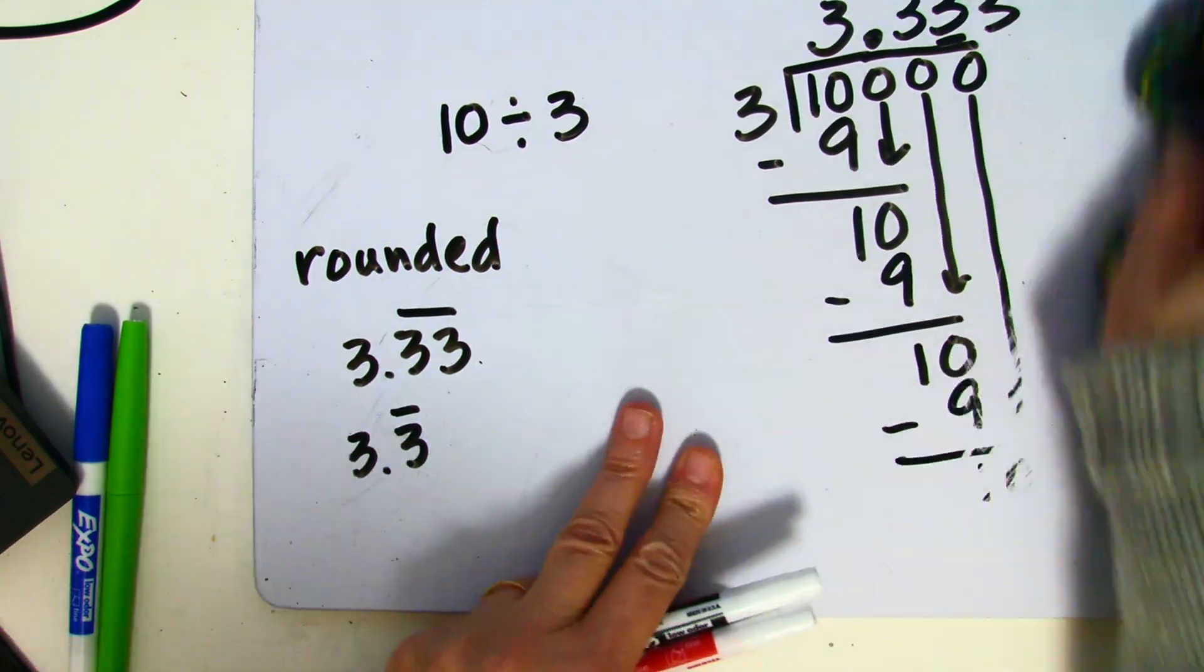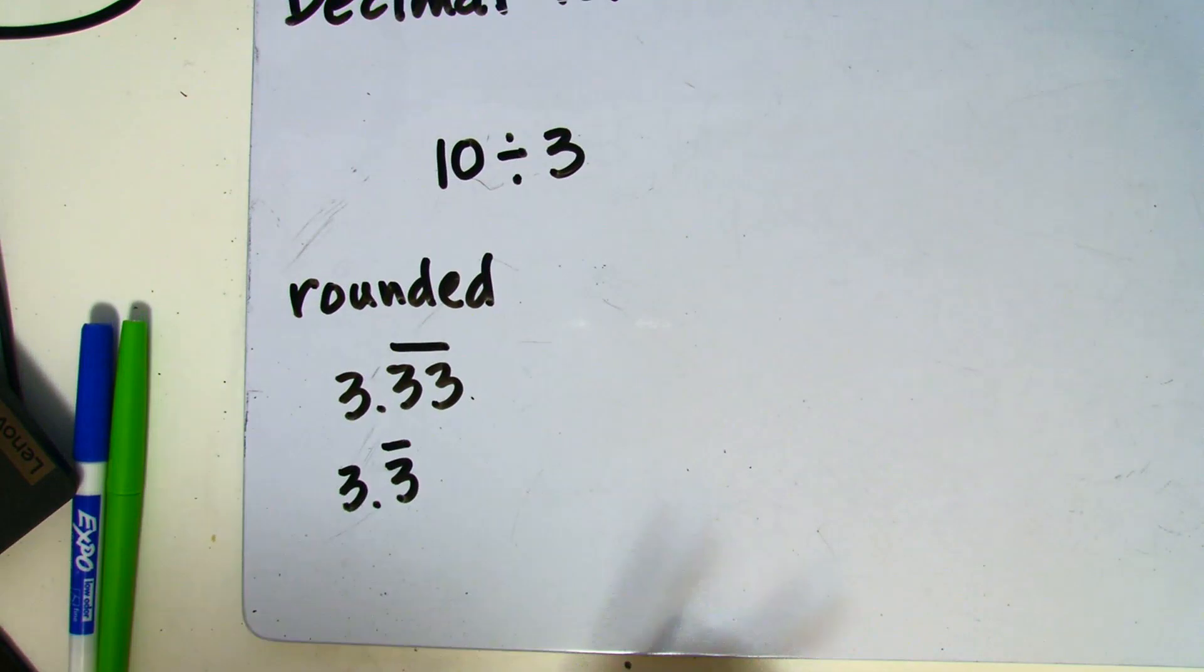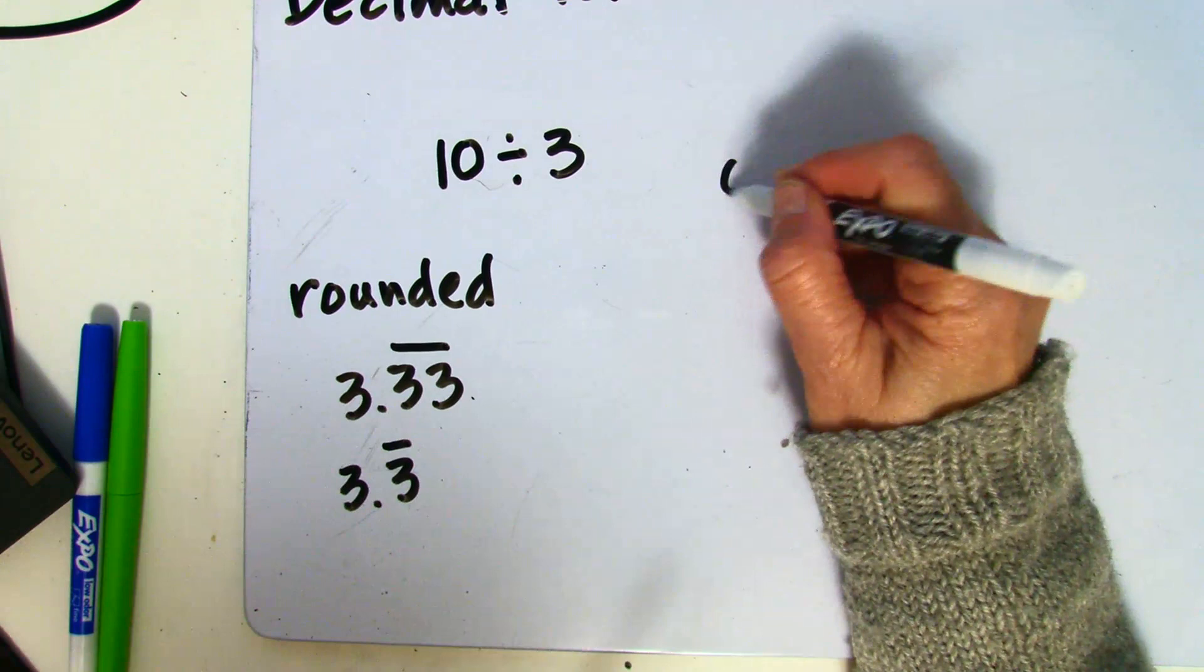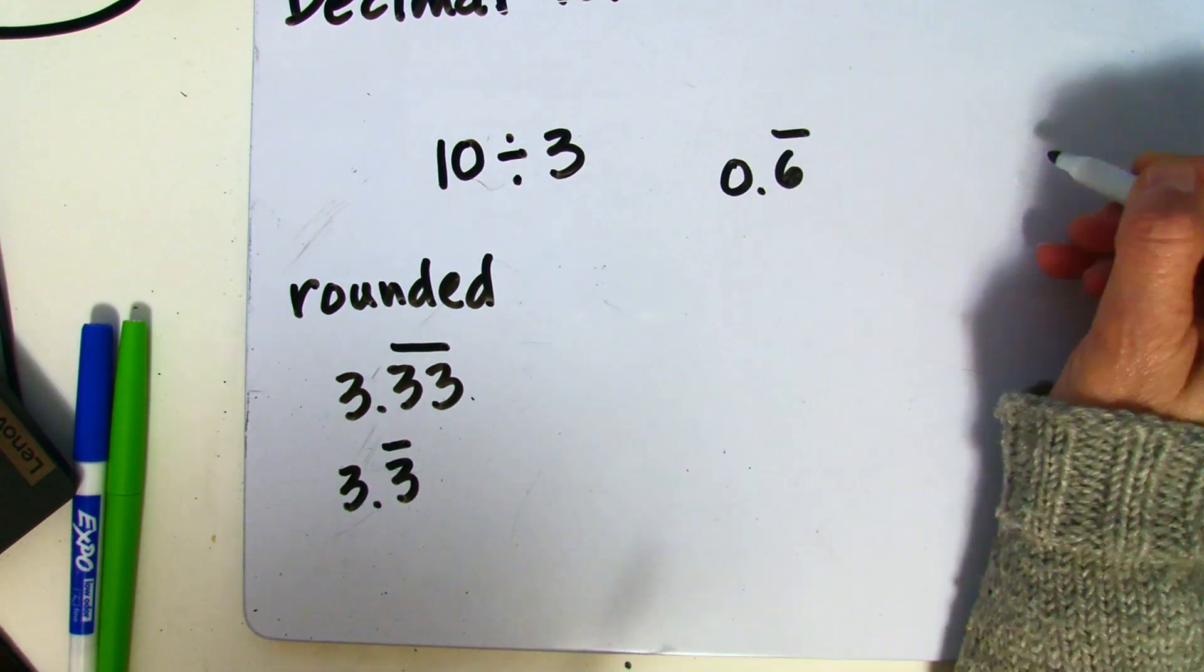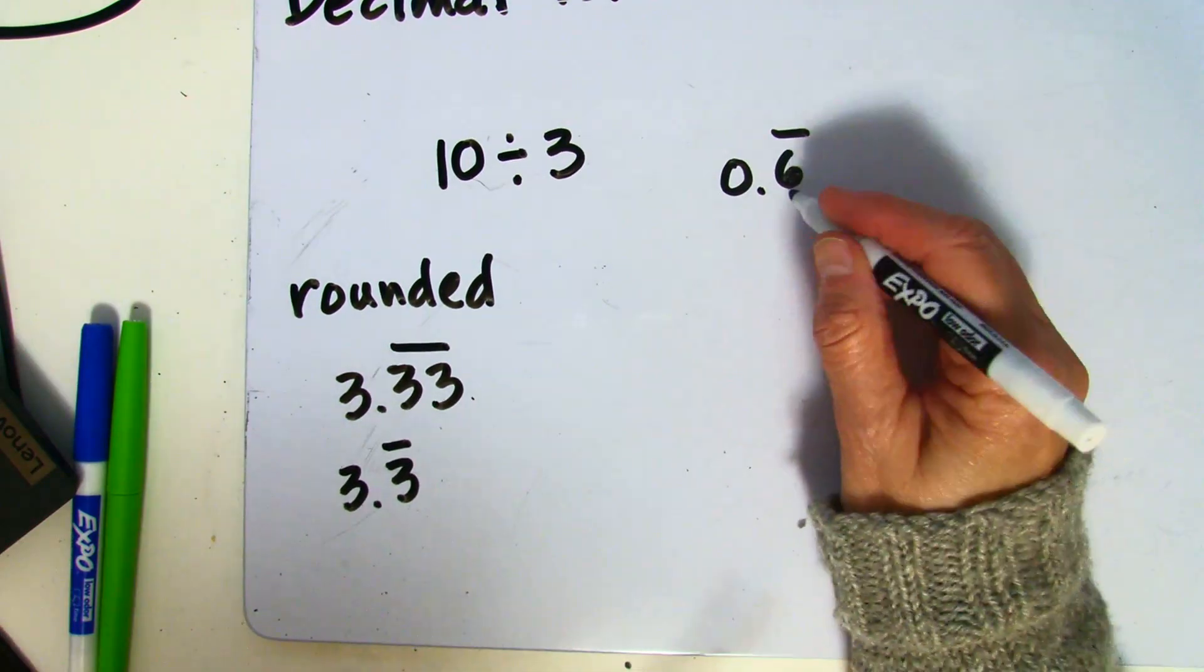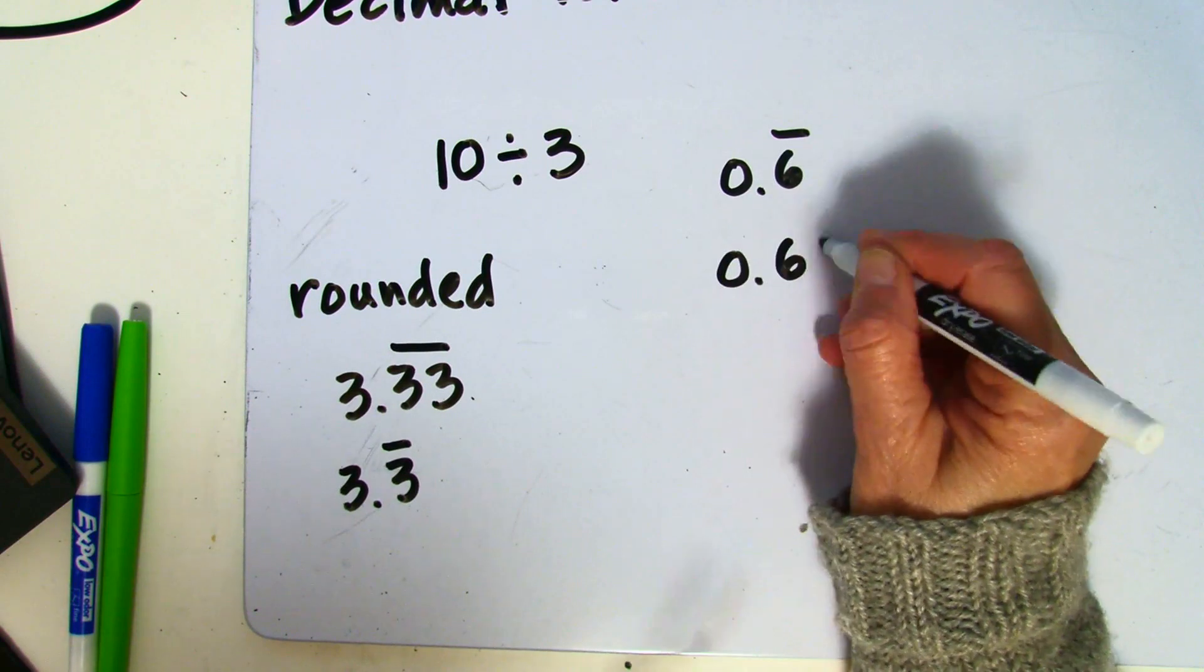Now, sometimes you get other repeated numbers. For instance, you might get 0.6̄, and that's going to repeat. So again, if you want to round to the nearest tenths, you would want to go out to the hundredths place, which would be 0.66.